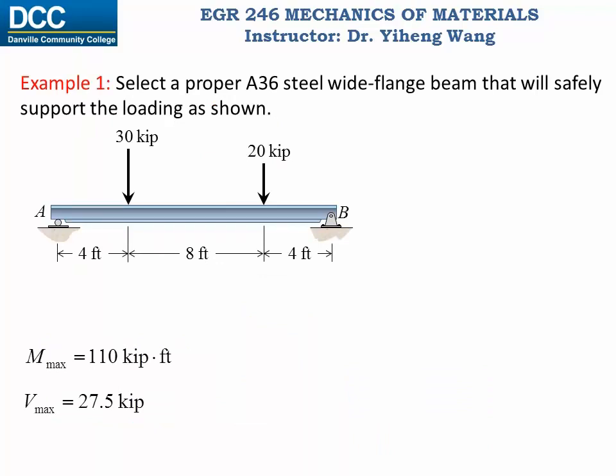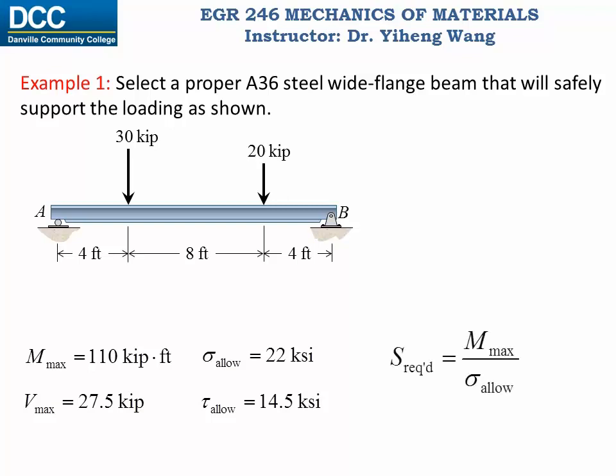We determined the maximum internal reactions from the shear and bending moment diagrams, and we can look up the material property for A36 steel. The allowable bending stress for A36 steel is 22 KSI, and the allowable shear stress is 14.5 KSI. Therefore, the required section modulus — defined as the maximum bending moment divided by the allowable bending stress — is 60 cubic inches in this case.